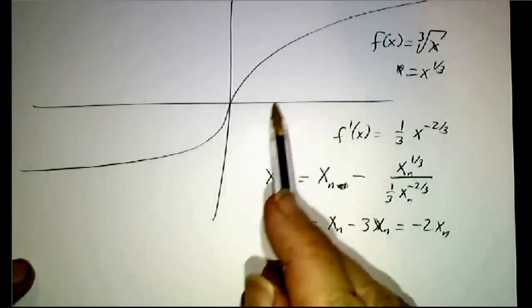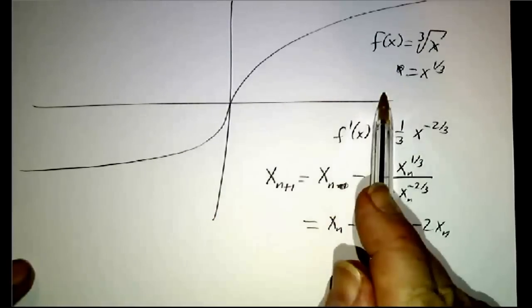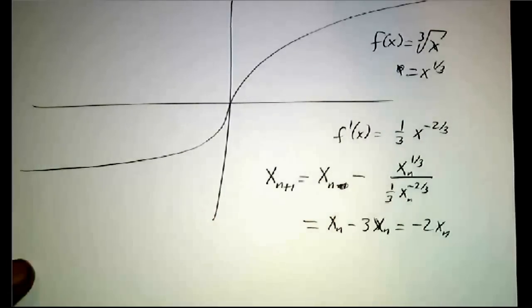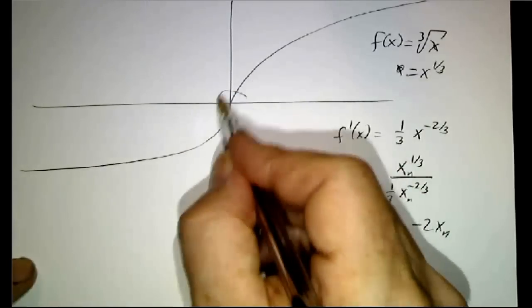If your first guess was a one, your next guess is going to be negative two. Your next guess is going to be four. Your next guess is going to be negative eight. It's going to bounce back and forth, getting farther and farther and farther away.